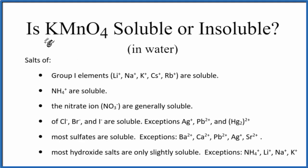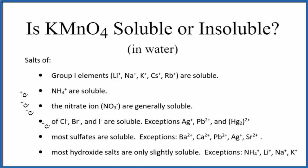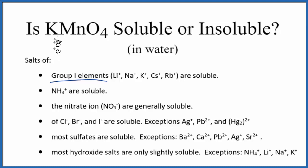In this video, we'll talk about whether KMnO4 — that's potassium permanganate — is going to be soluble or insoluble in water. It's a fairly common compound that we use in chemistry. So we'll look at the solubility rules here. This is a brief set, and as we go down, it says group one elements. Potassium is in group one on the periodic table, so they are soluble in water. We expect that potassium permanganate is going to be soluble in water.